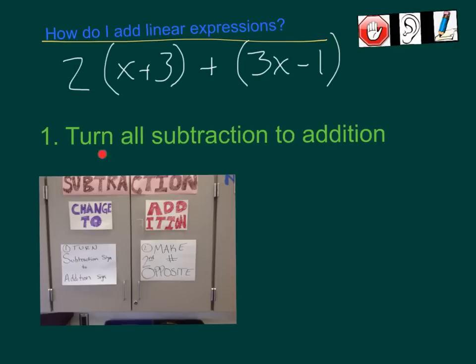When you're adding linear expressions, first thing we're going to do is turn all subtraction to addition. You'll see this picture right from my integer cabinet. Remember, the matrix said subtraction does not exist, so we're always going to change it to addition. We do that in two ways: turn the subtraction sign to addition, then make the second number opposite. I see one subtraction sign within here. So I'm going to say 2(x + 3), nothing to change there, plus 3x, turn subtraction to addition, and then make the second number opposite, plus negative 1. That's my first step: turn all subtraction to addition.